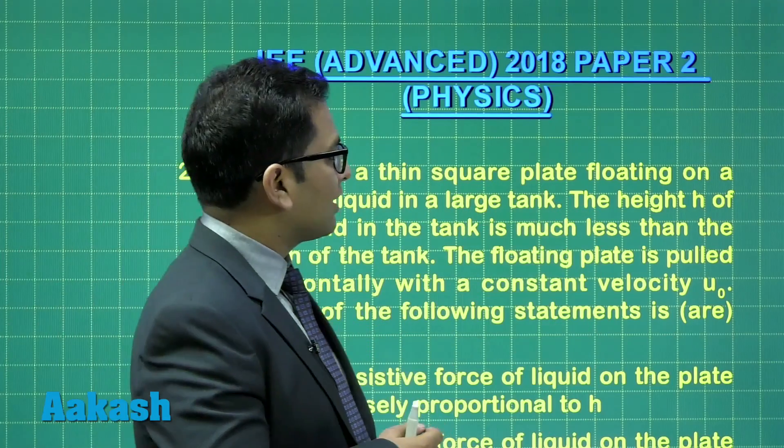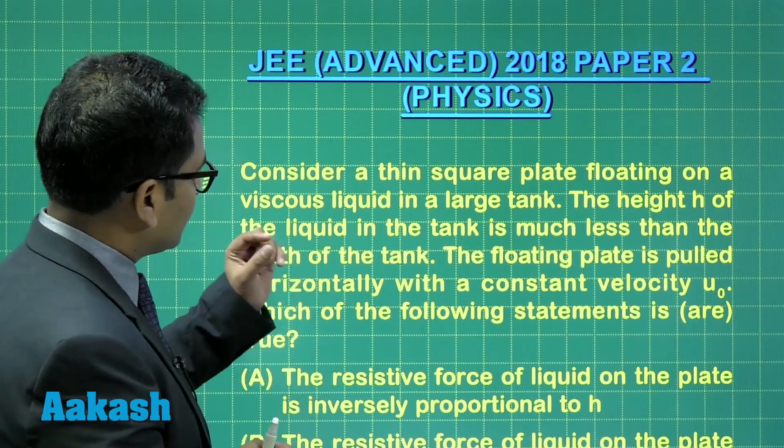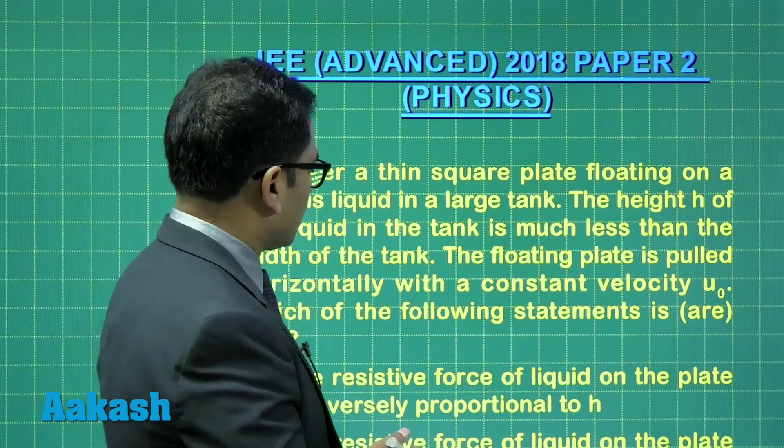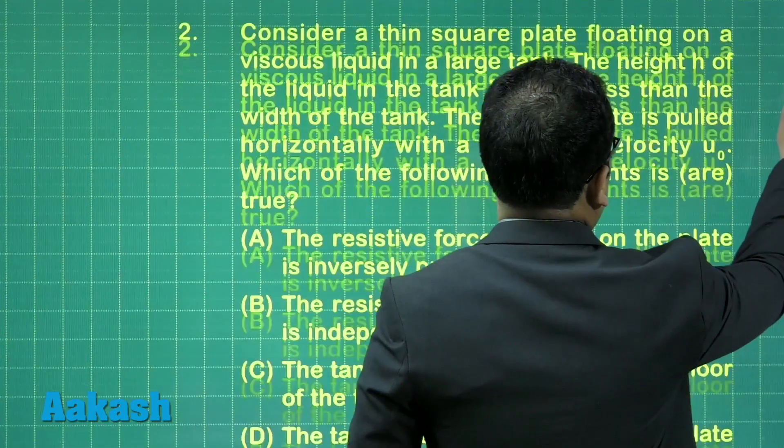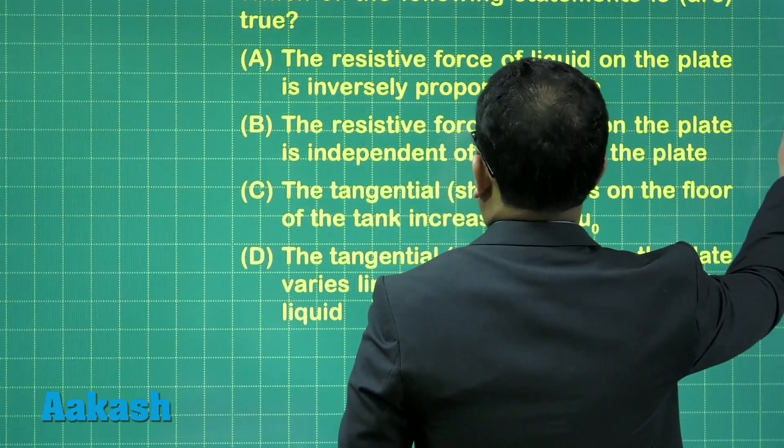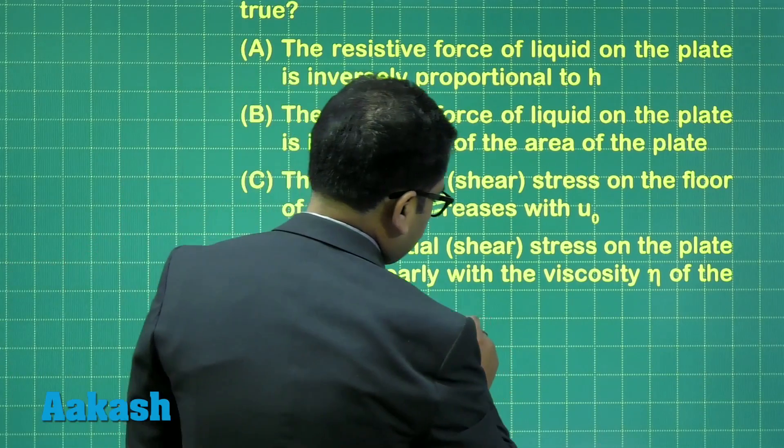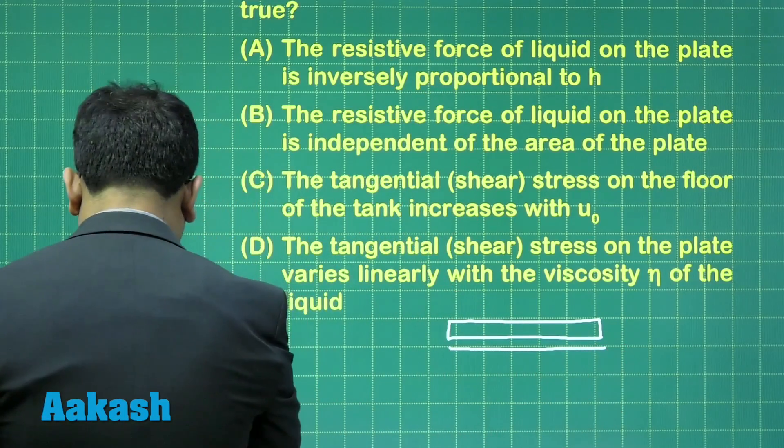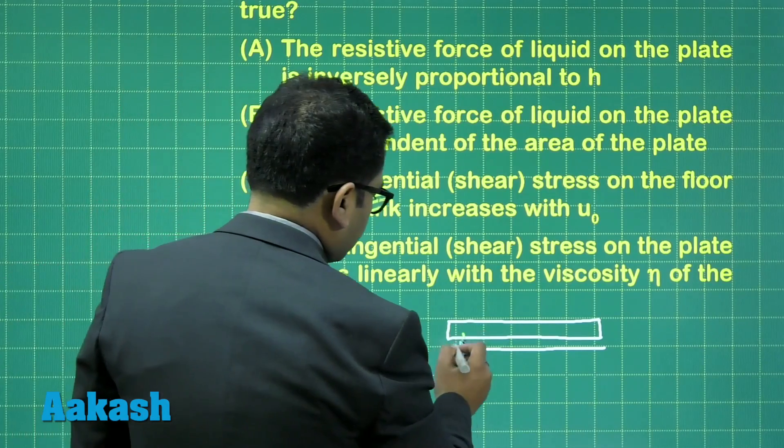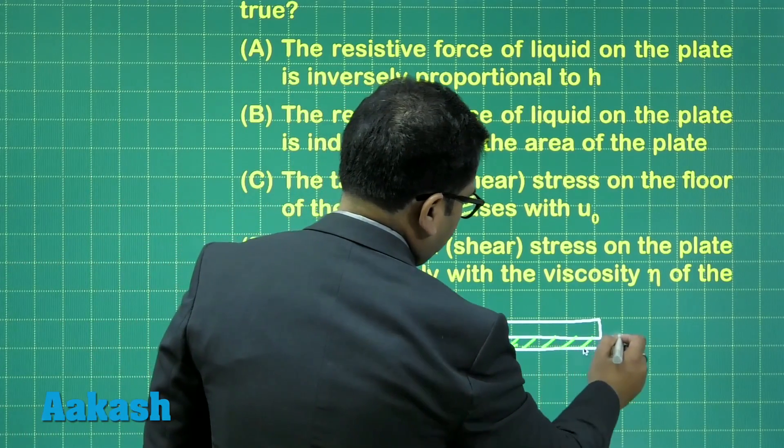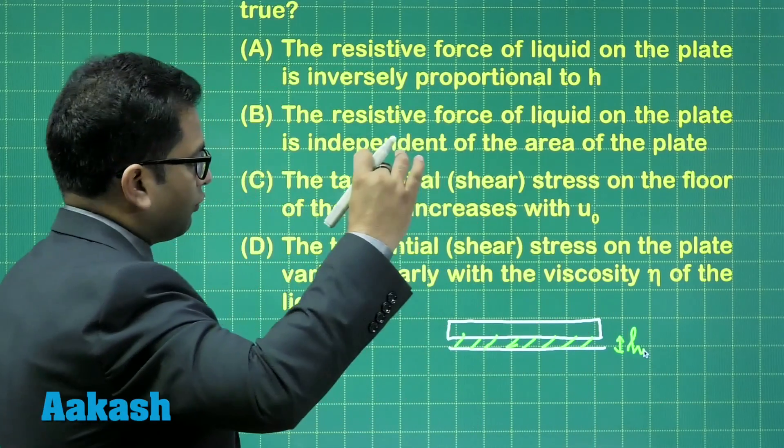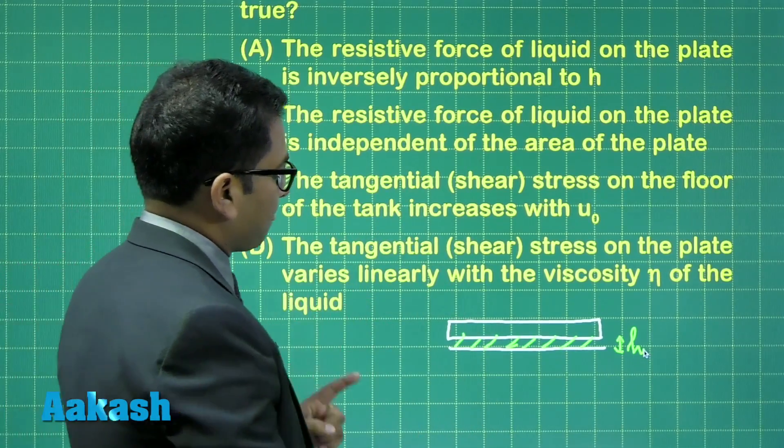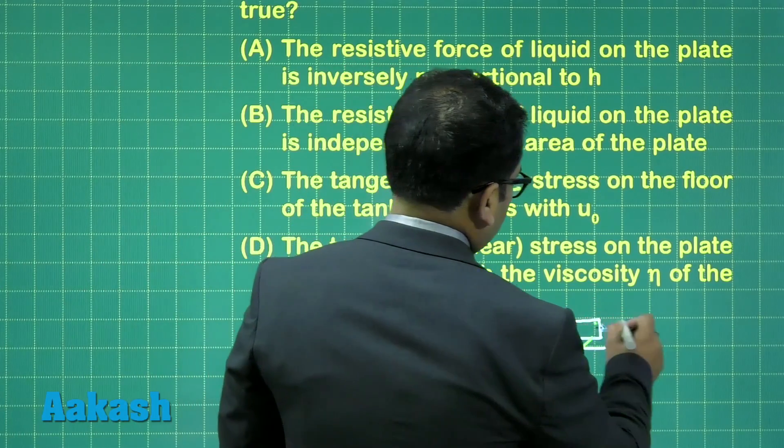So here, consider a thin square plate floating on a viscous liquid in a large tank. The height h of the liquid in the tank is much, much less than the width of the tank. And the floating plate is pulled horizontally with a constant velocity U₀. So it is something like this. If I'll draw the picture, the picture would be something like this. The plate is there, and here is the liquid. The shaded one is the liquid. So this is the liquid. And the liquid column is of length or depth or height, whatsoever you say. Of h height is the liquid column, which is very, very small. And this plate has been pulled with a constant speed.